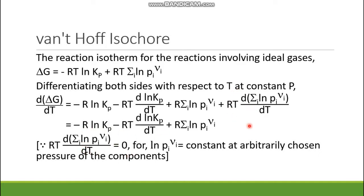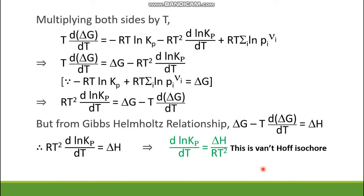We mention why this part is vanishing. If both sides are multiplied by temperature, then on the left-hand side we get T·d/dT of ΔG. On the right-hand side, -R ln Kp becomes -RT ln Kp; the term -RT d ln Kp/dT becomes -RT² d ln Kp/dT; and R becomes RT in the third term. Now the combination -RT ln Kp + RT Σᵢ ln Pᵢ^νᵢ is nothing but ΔG, giving: T·d/dT(ΔG) = ΔG - RT² d/dT ln Kp.